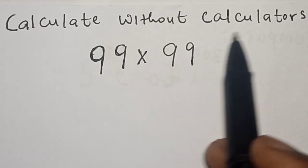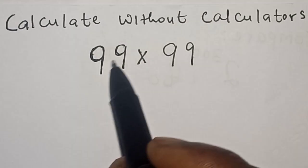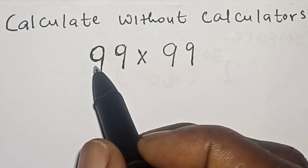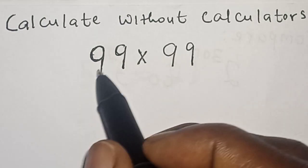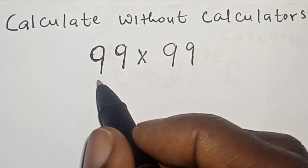Calculate without calculators: 99 multiplied by 99. Hi everyone, welcome to my class. In this class you want to solve this math problem without using calculator, but in this case we're going to consider two different methods.